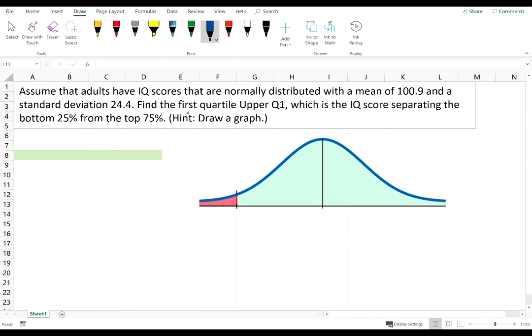So the first quartile—it's important to note that the first quartile is the X value. The horizontal axis is X, and we're looking for this particular X value that separates the top 75% from the bottom 25%. So the areas are 0.25 and 0.75, not exactly drawn to scale, but that's all right.